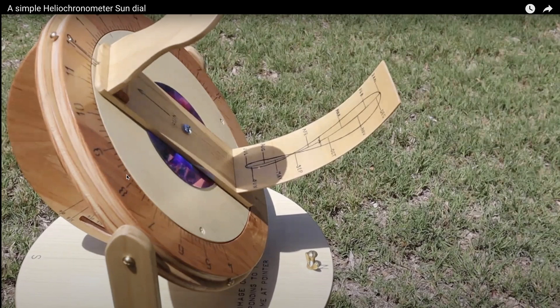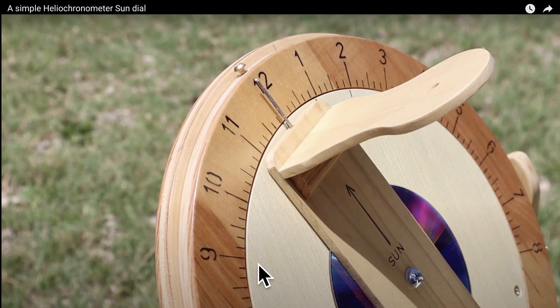Notice that he has the sundial marked up in ten minute increments: that would be eight o'clock, 8:10, 8:20, 8:30, 8:40, 8:50, 9 o'clock. And when everything is aligned, you simply read off the time.